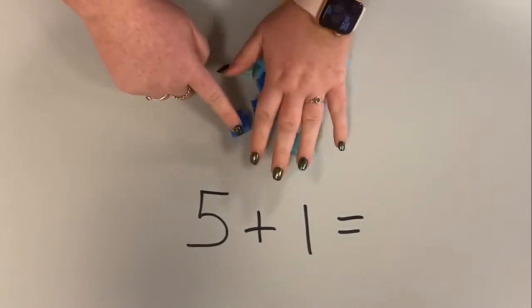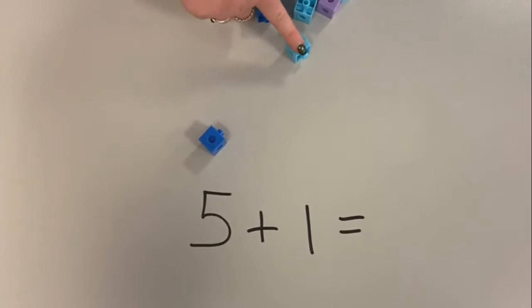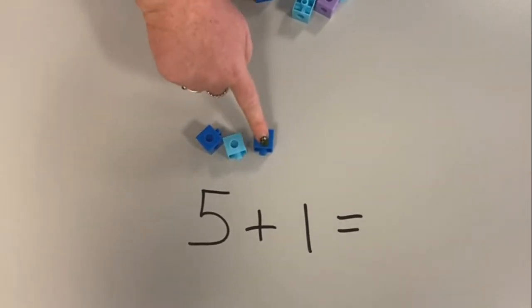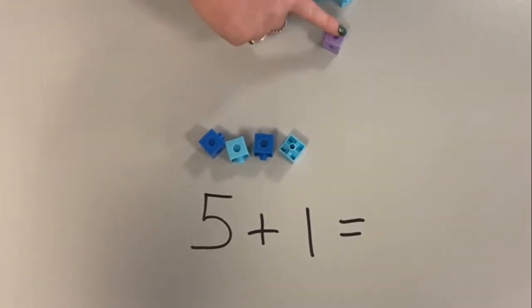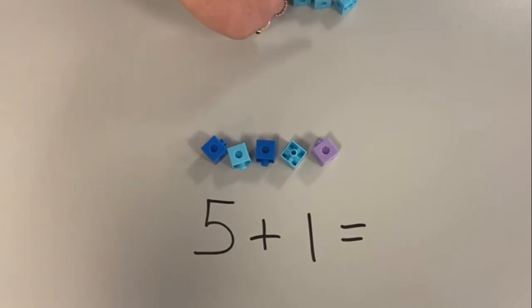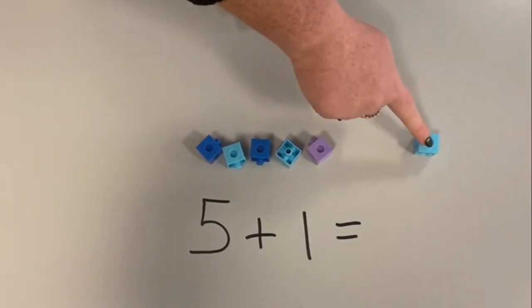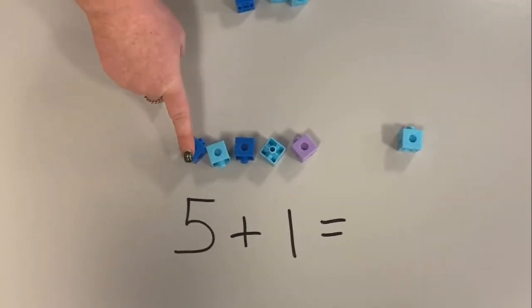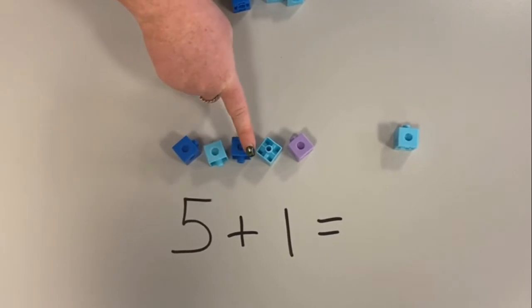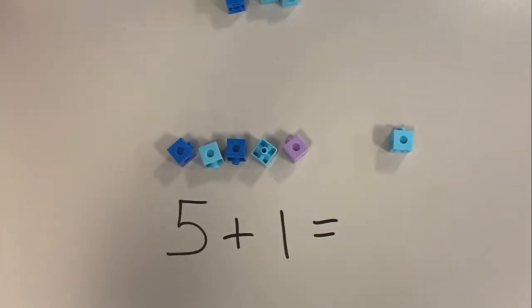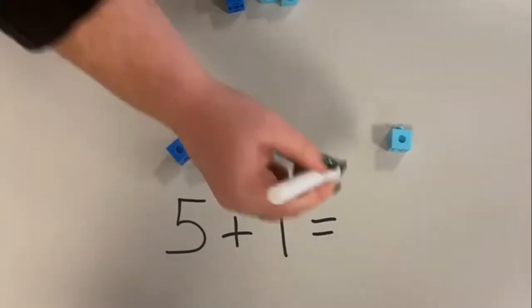We need to count out five: one, two, three, four, five. We're going to add one more and we have got one, two, three, four, five, six. So the answer is six.